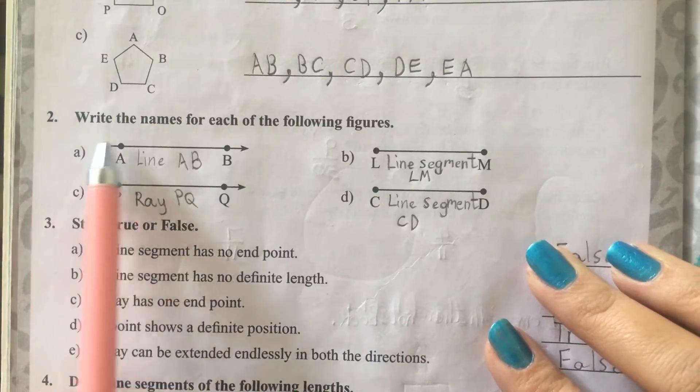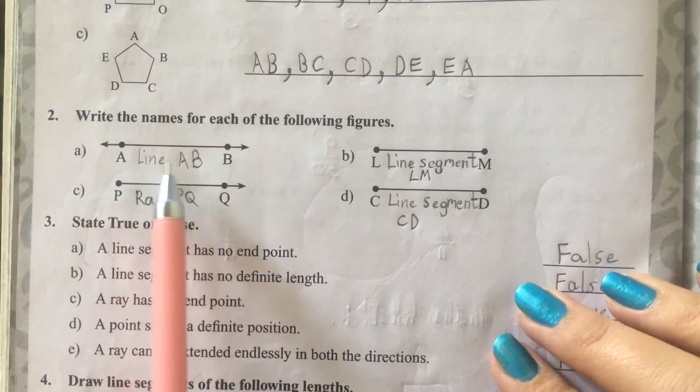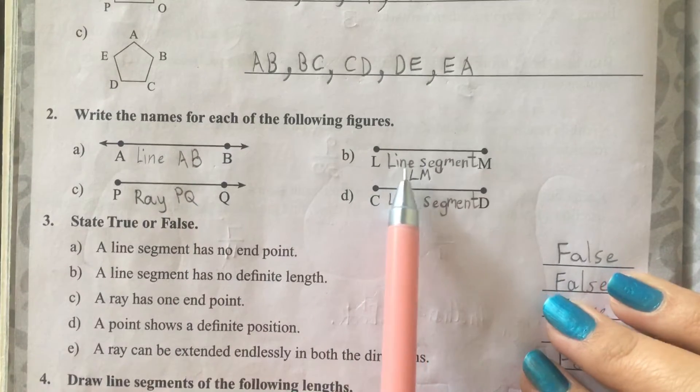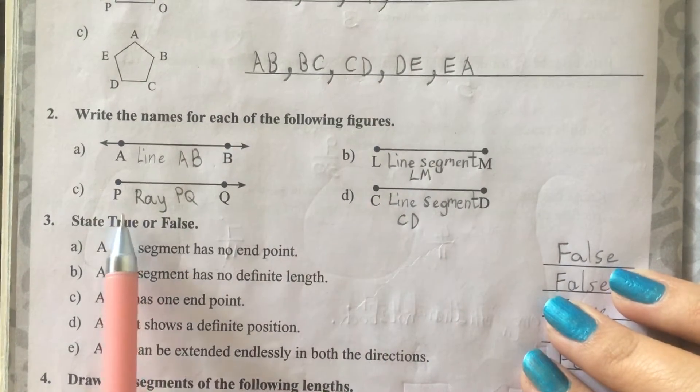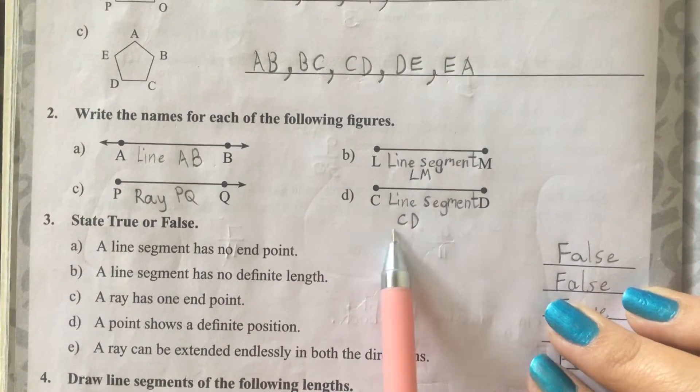2. Write the names for each of the following figures. This is line AB, this is line segment LM, this is ray PQ, and this is line segment CD.